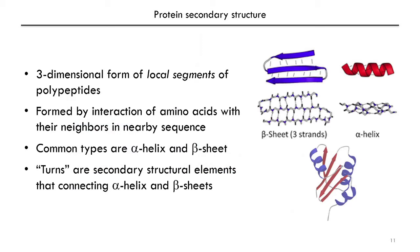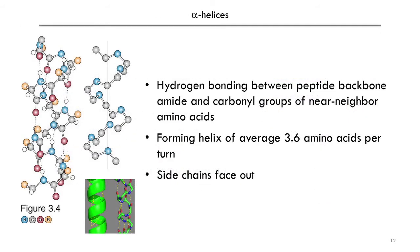Protein secondary structure is made up of three-dimensional structural elements that form in local segments of polypeptides, resulting from the interaction of amino acid residues with their neighbors in nearby sequence. Common types of secondary structural elements are alpha helices and beta sheets. Turns, or loops, are secondary structural elements that connect alpha helices or beta sheets with one another. An alpha helix is formed when the peptide chain twists into a helix, resulting from hydrogen bonding between peptide backbone amide and carbonyl groups of near-neighbor amino acids. The resulting right-handed helix has about 3.6 amino acid residues per turn.